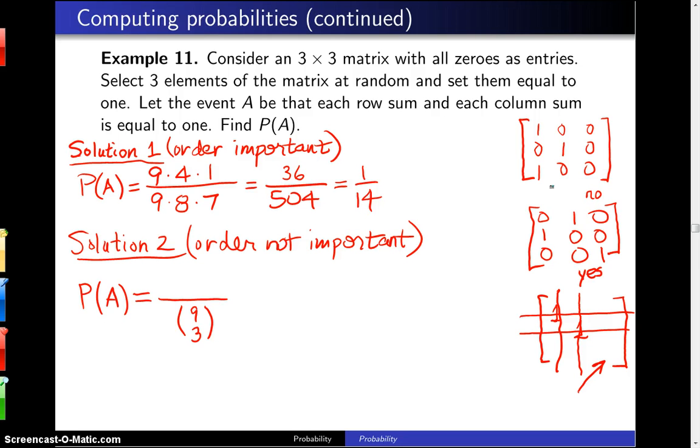Well, once you do that, to get a row sum and column sum of one, row sums and column sums being one, you have three different choices for this first row of where your one will go. Once you go down to that second row, that first column is already taken. So now you only have two choices. And then finally for the last one to put in place, there is only one choice.